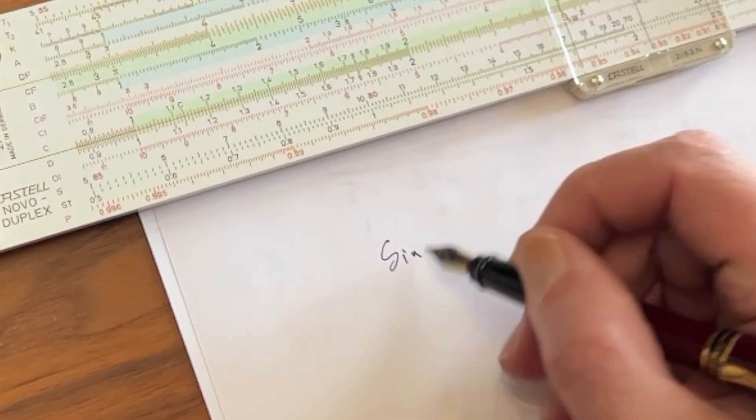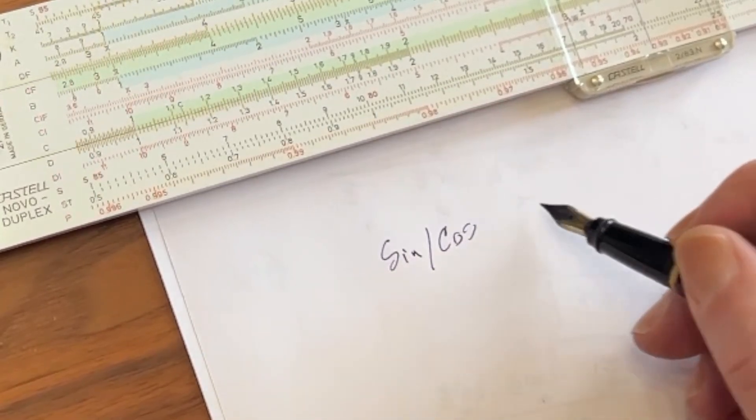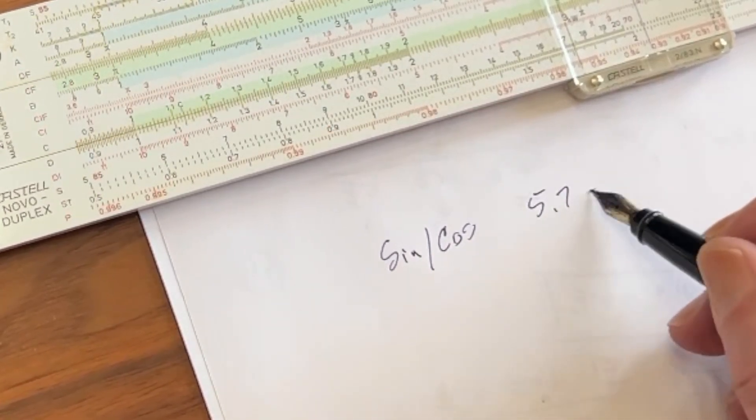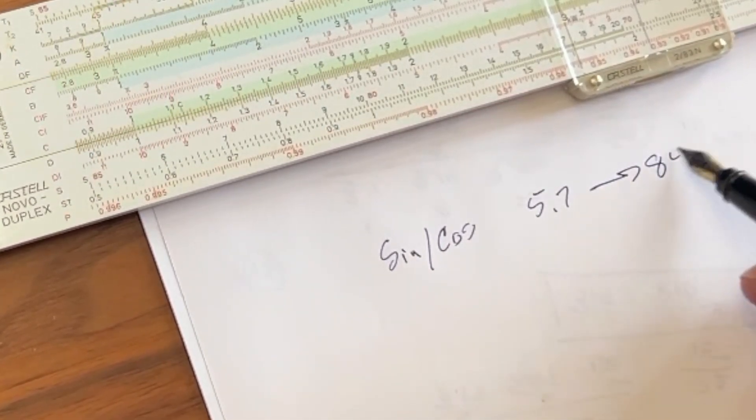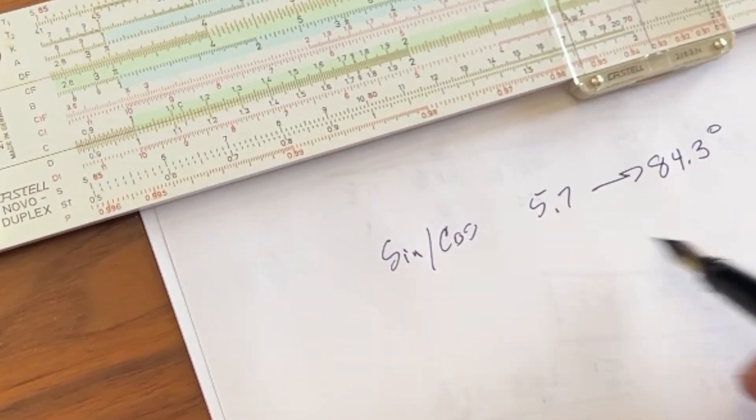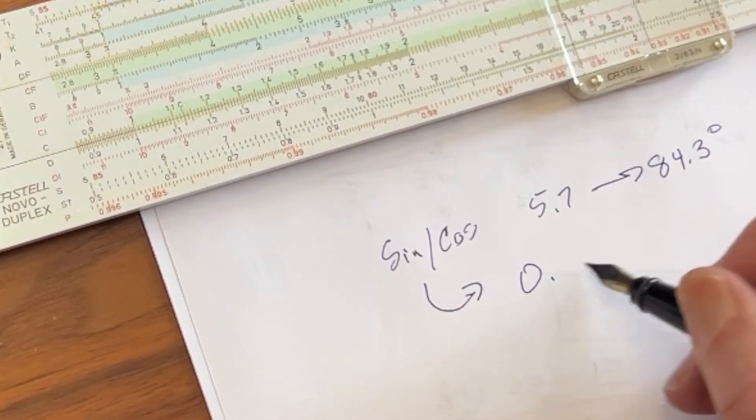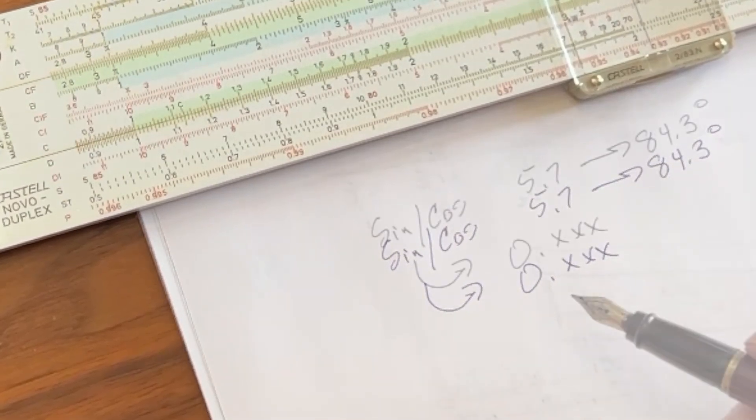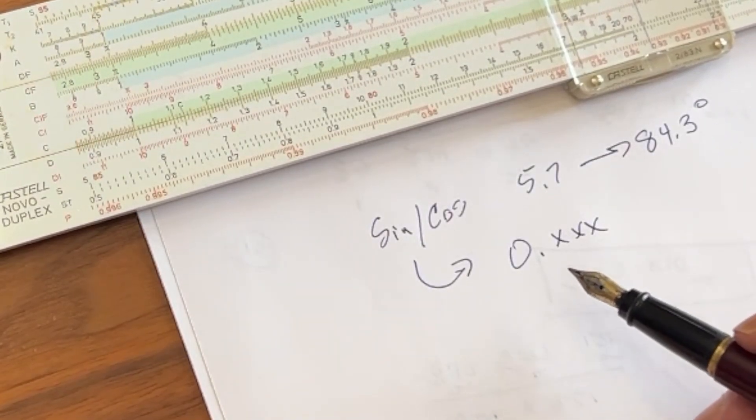So for sine and cosine, for values of 5.7 to 84.3 degrees, the value is going to be 0.xxx. Now just to give you an idea of where we're going with this,